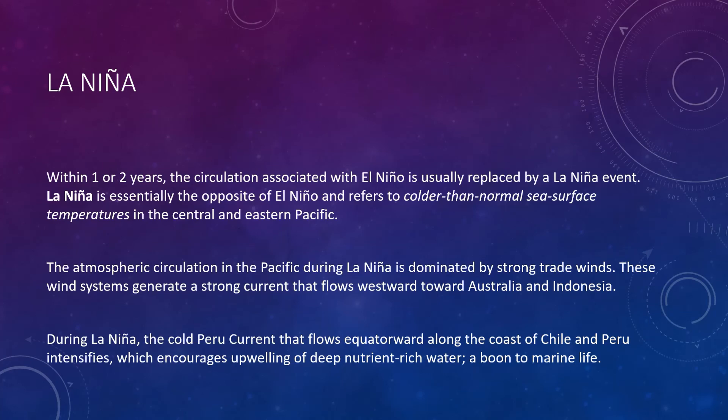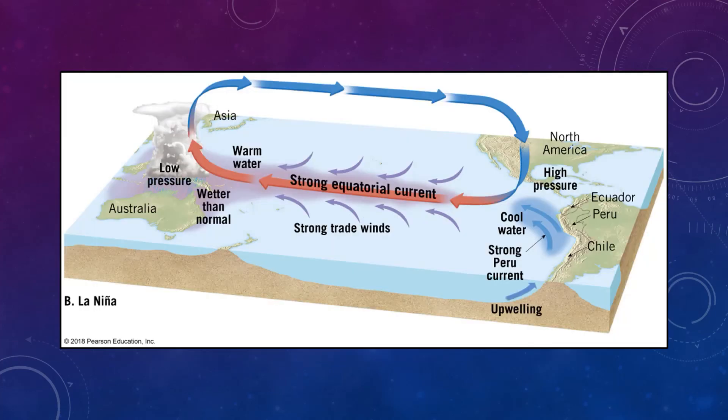Well, within one or two years, the circulation associated with El Niño is usually replaced by La Niña. La Niña, which means little girl, is essentially the opposite of El Niño, which refers to little boy, and refers to colder-than-normal sea surface temperatures in the eastern Pacific. The atmospheric circulation in the equatorial Pacific during La Niña is dominated by strong trade winds. These wind systems in turn generate a strong equatorial current that flows westward, from South America toward Australia. This circulation pattern is often associated with flooding in northern Australia and Indonesia, whereas especially dry conditions prevail along the west coast of South America. So in other words, it's basically just the opposite of El Niño. So now we're colder on our side with more high pressure, so less storms, but the opposite is true over here. Now they get lots of low pressure and warmer waters over Australia and Indonesia, as an example.